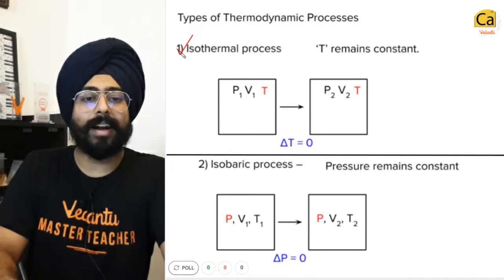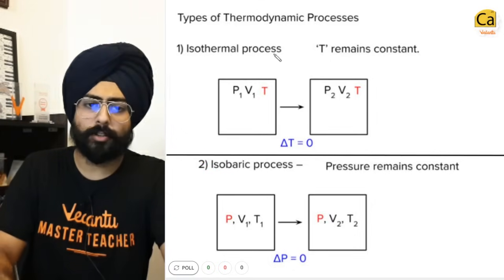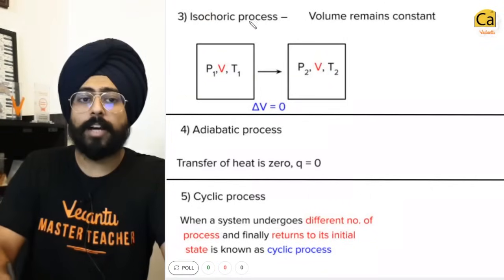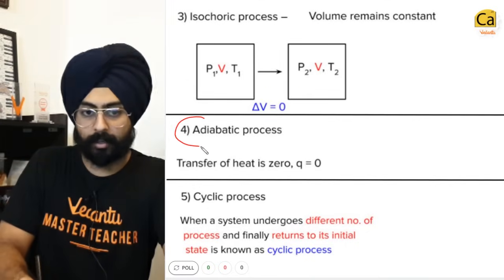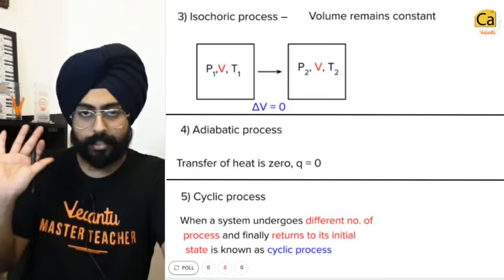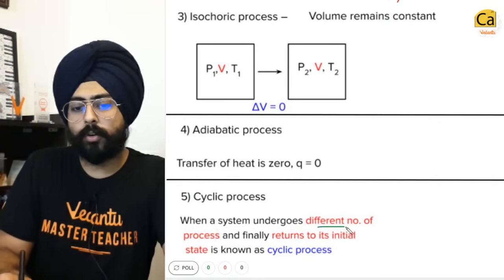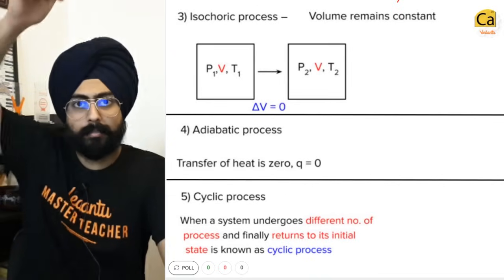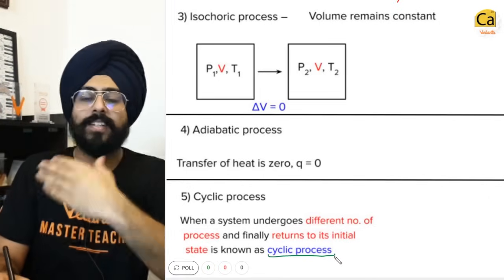Types of thermodynamic processes: isothermal processes where ΔT = 0; isobaric processes where ΔP = 0, so pressure remains constant; isochoric processes where ΔV = 0, so volume remains constant; and adiabatic processes where heat transfer Q = 0. There are also cyclic processes, where a system undergoes different processes and finally returns to its initial state — like going around the entire world and coming back, displacement equals zero.